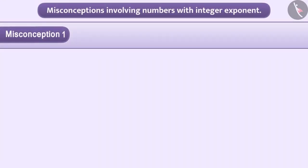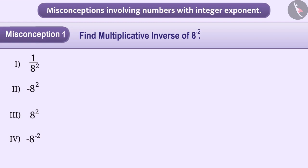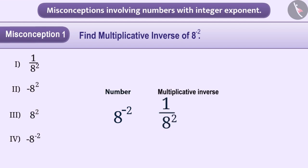Misconception 1: Find the multiplicative inverse of the number 8 to the power minus 2. Some children write the multiplicative inverse of this exponential number as 1 upon 8 to the power 2. The reason for this is that they do not understand how the multiplicative inverse of exponents is written.